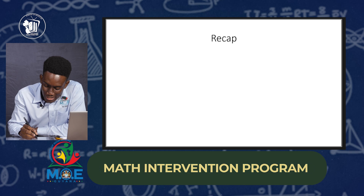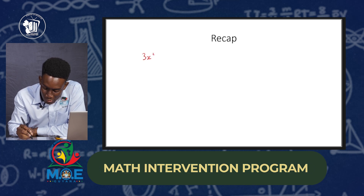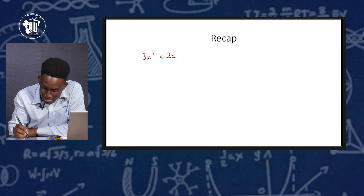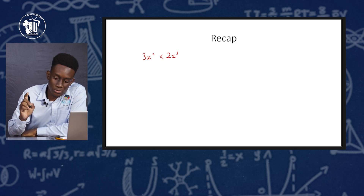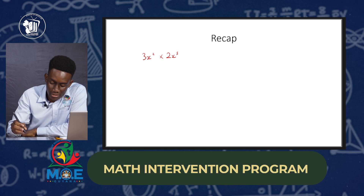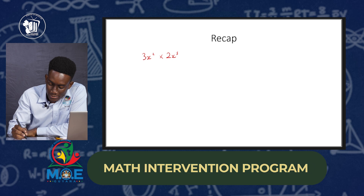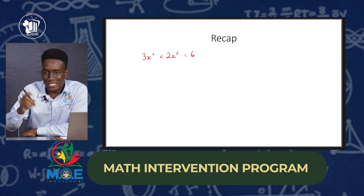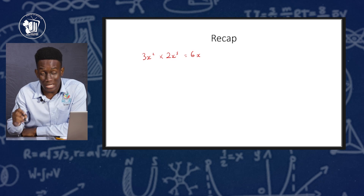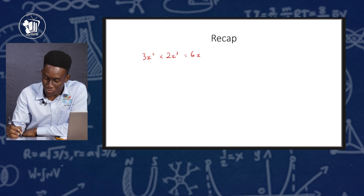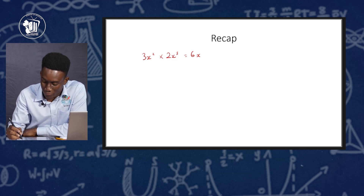So let's say we had 3x to the second multiplied by 2x to the third. The first thing to do is to multiply the numbers, so 3 times 2 gives you 6, and then the bases are the same so we put back the base and add the indices — 2 plus 3 gives you 5.